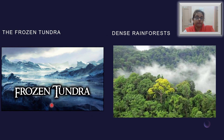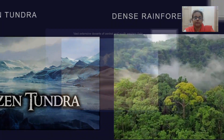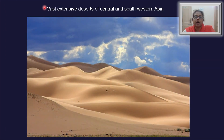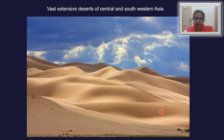In the north we have the frozen tundra which does not have any vegetation whatsoever, except for some flowering plants in its periphery. The dense rainforest has a huge amount of biodiversity and covers most of southeastern Asia. Elsewhere we find vast extensive deserts in central and southwestern Asia, where as far as your eyes can see, you can only see dunes of sand with scattered vegetation of xerophytes, which mainly includes cactus, bushes, and shrubs.